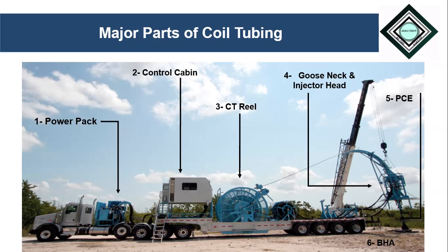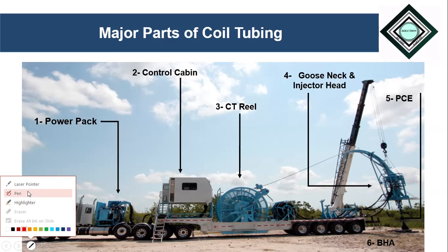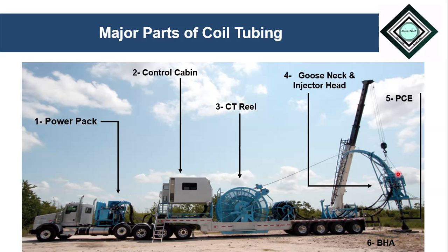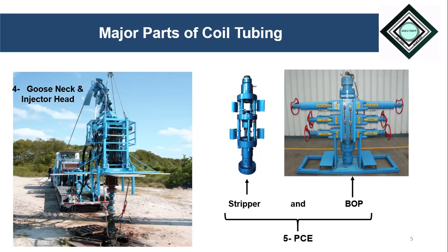The fourth part is the goose neck and injector head. As we can see in the diagram, the goose neck is used to guide the coil tubing pipe so that it can enter into the injector head and then ultimately into the well. When we first see the coil tubing unit we may think the reel is used to run and pull the coil tubing pipe, but that is not the case — it is the injector head which injects and pulls the CT pipe into the well in a controlled manner.